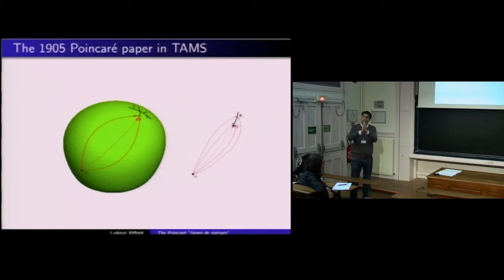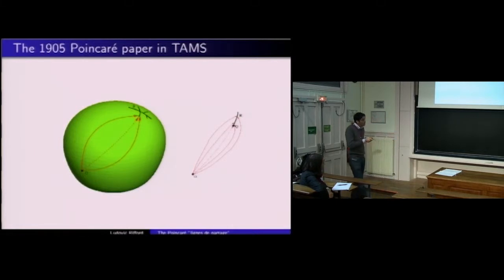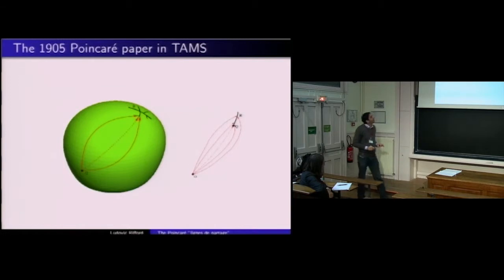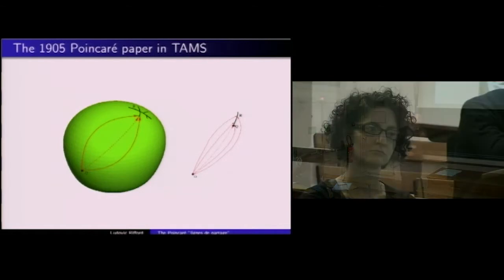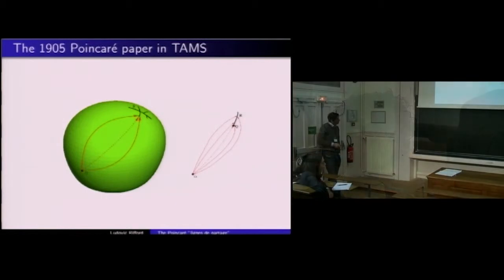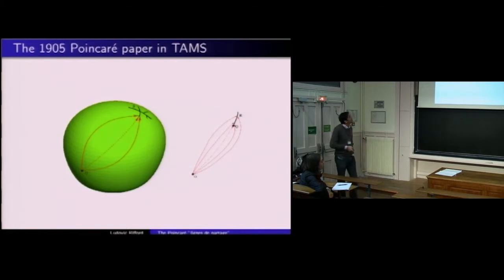Ils vont faire de Q un point conjugué. Qu'est-ce qu'un point conjugué ? C'est un point tel que si vous prenez la géodésique minimisante allant de O à Q et que vous perturbez la vitesse initiale V en V + δV, à l'arrivée au temps correspondant à la longueur de la géodésique, vous avez effectué un déplacement en espace de l'ordre de δV au carré. Cela nous donne des informations sur les lignes de partage, et on va continuer cette histoire en exposant différents types de propriétés.